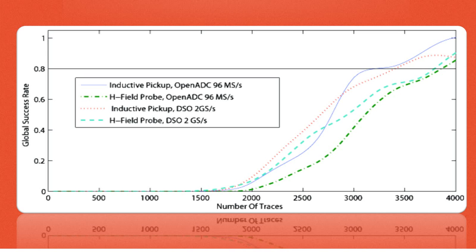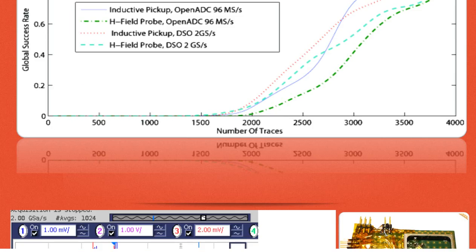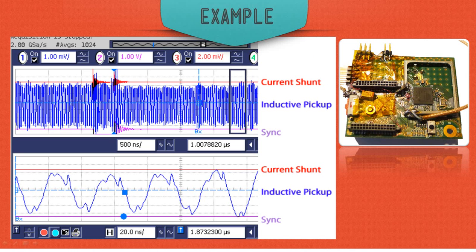And again, we'll see the same thing. Here's with the OpenADC. This is another test case. Here I have the inductive pickup. Here I have the H-field probe. Here I have the inductive pickup with a DSO. I switched those two. And then the DSO with the H-field probe. Again, it is still performing a little better.